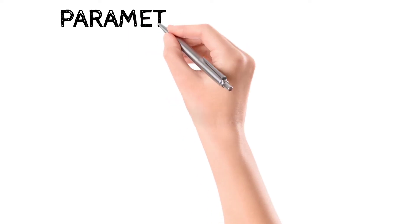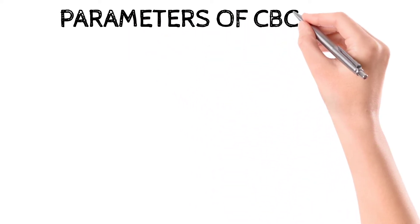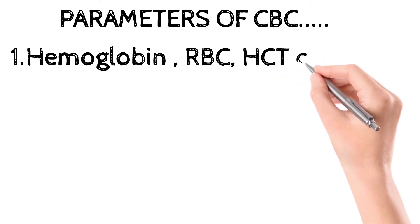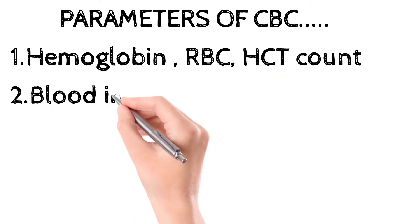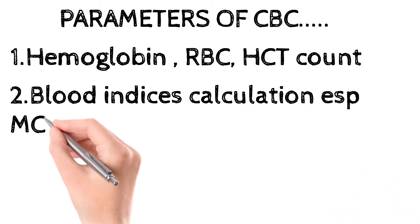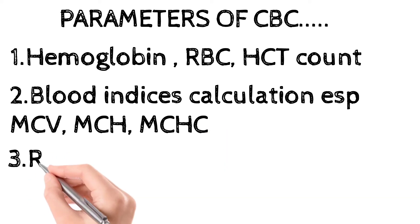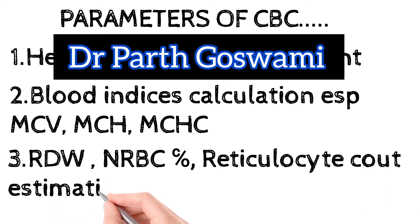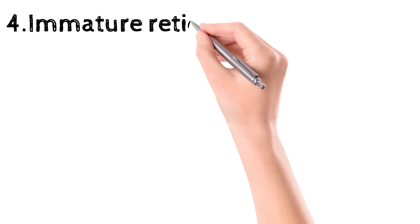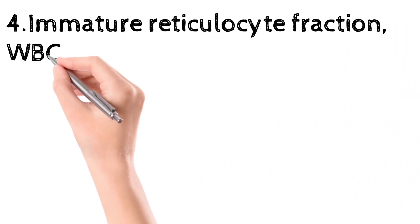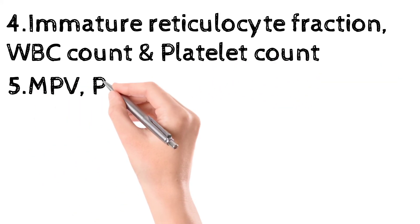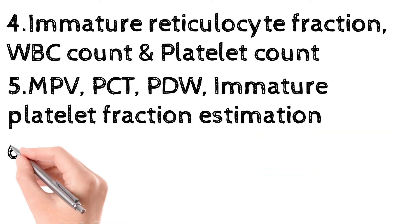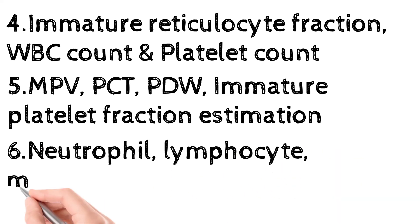Now, let's see which parameters can be estimated with CBC. CBC includes the following parameters: hemoglobin, RBC count, and hematocrit. Second, it is helpful for blood indices calculation — especially MCV, MCH, and MCHC. Third, RDW, nucleated red blood cell count percentage, and reticulocyte count estimation. Fourth, immature reticulocyte fraction, total WBC count, and platelet count.